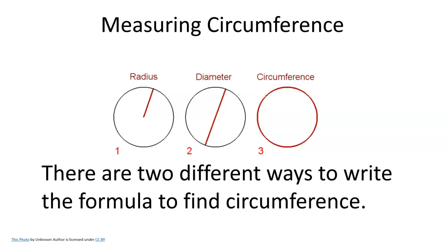The first thing that I want to talk about is measuring circumference. So radius is half of a diameter. Your diameter is from one point of the circle to the other point of the circle straight across from it. And your circumference is your measurement around.